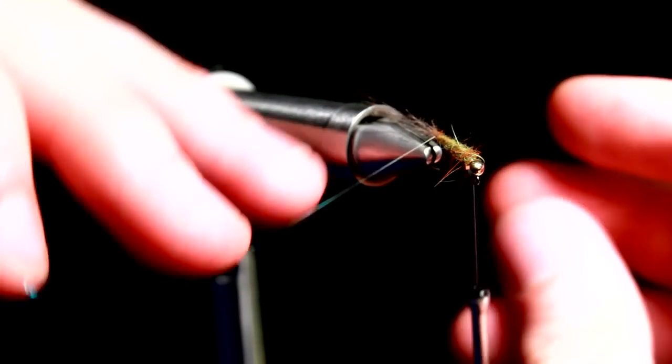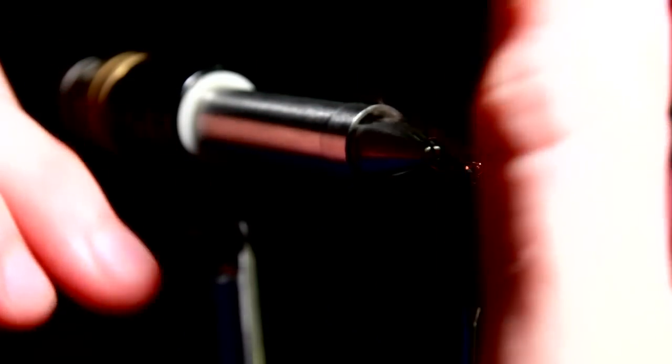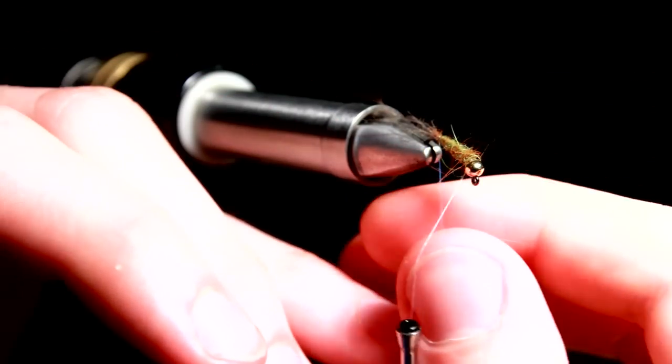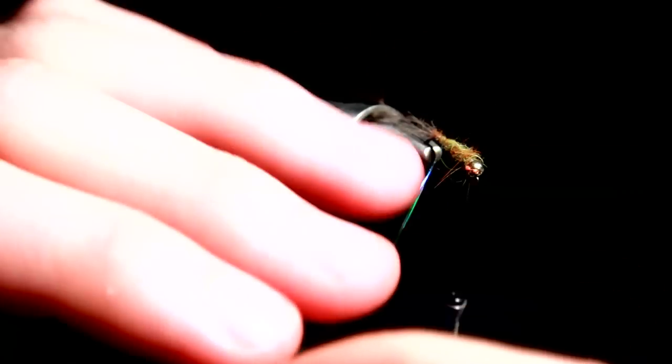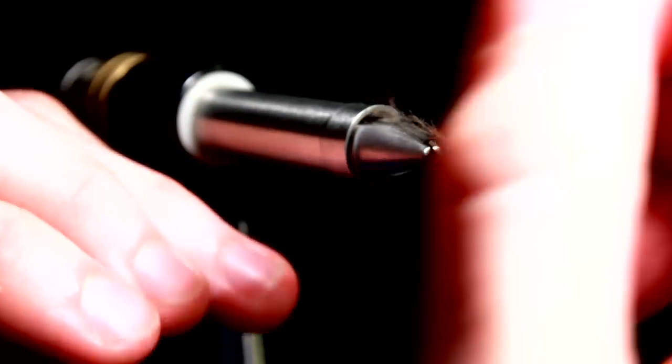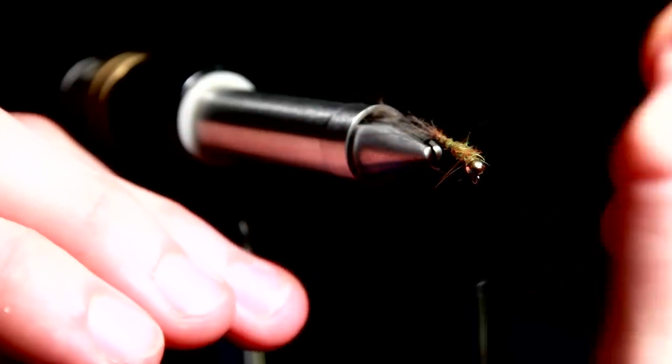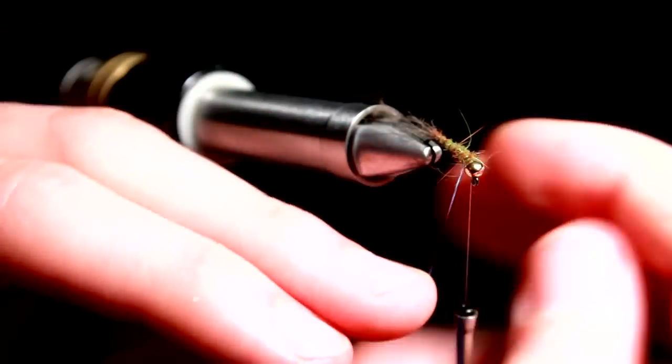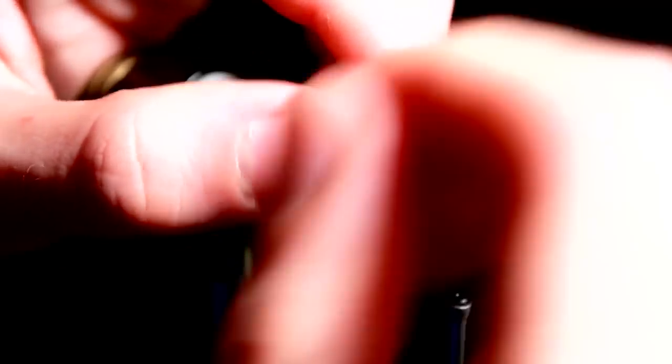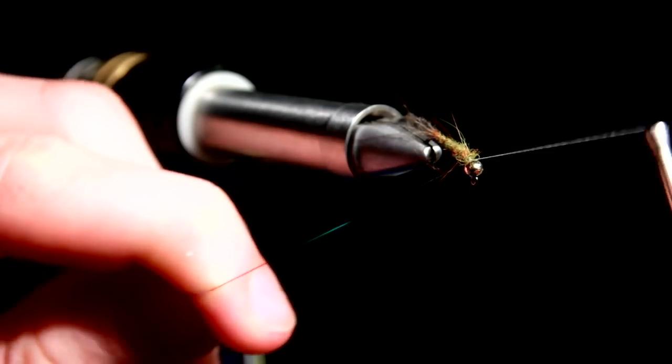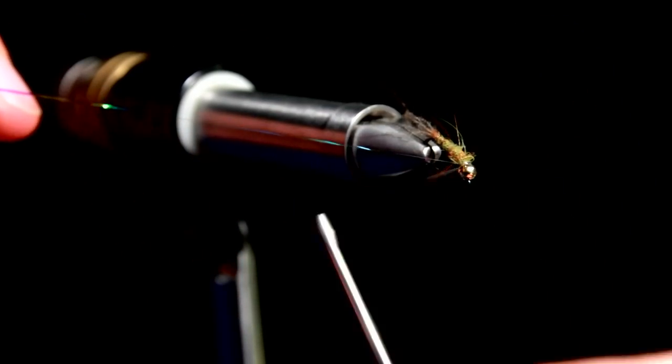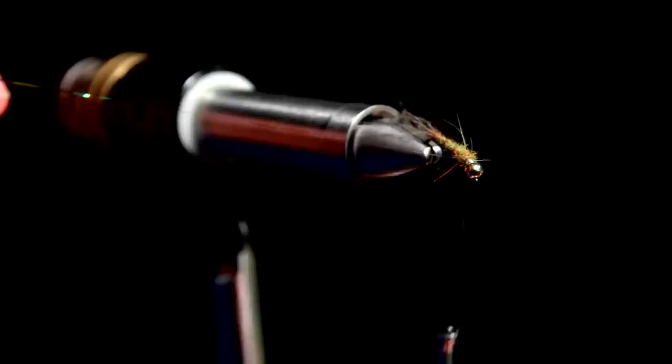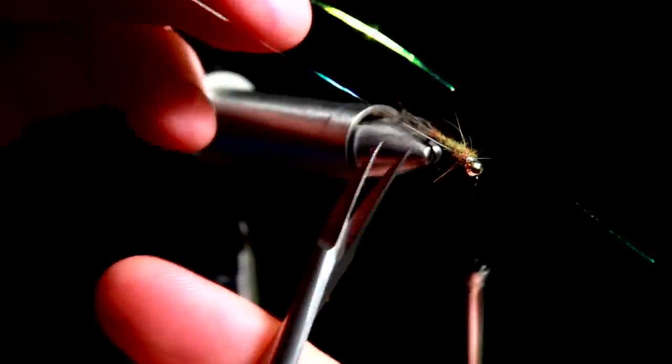Then we wind our rib. Don't make too many turns. I believe the flashaboo becomes dominant if you do. So maybe five turns or something like that. I think that is about the right amount of flash. Secure it with the tying thread and cut off the waste end.